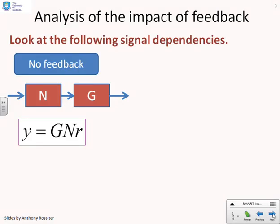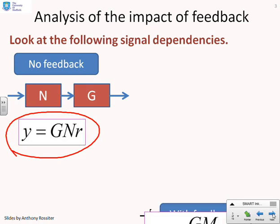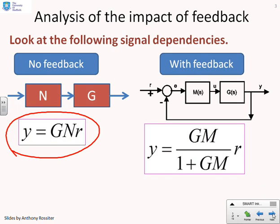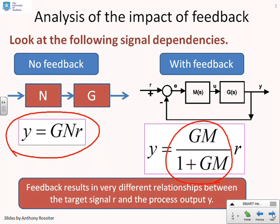First, just a reminder of why feedback changes behaviors. You'll notice that if you've got open loop you tend to have a relationship between the target r and the output y, something like y equals GNr. When you close the loop the relationship becomes something like GM over 1 plus GM, so clearly very different from the open loop transfer function G and dependent on M. In other words feedback results in a different relationship between the target signal r and the process output y.